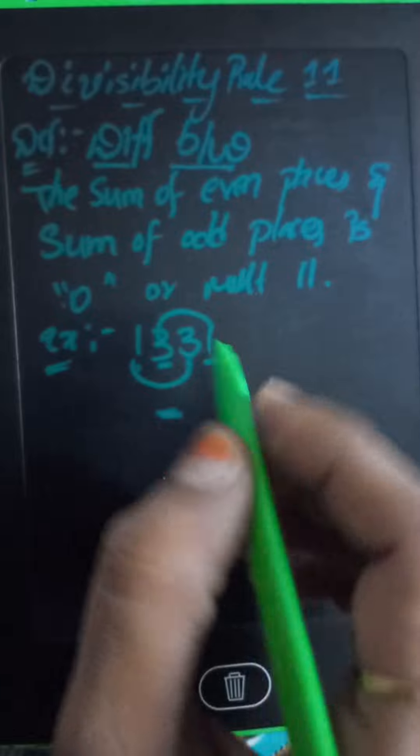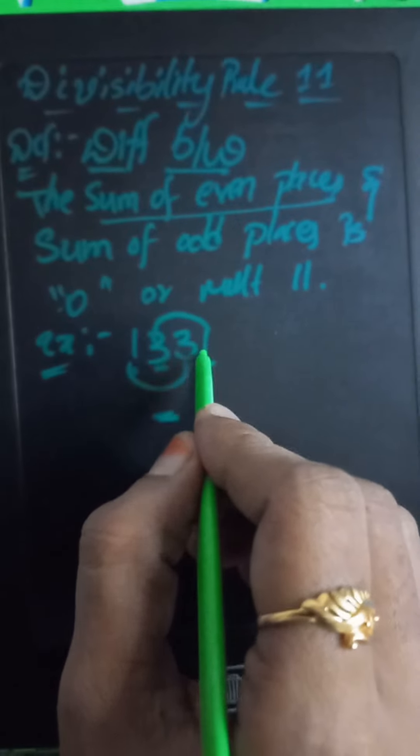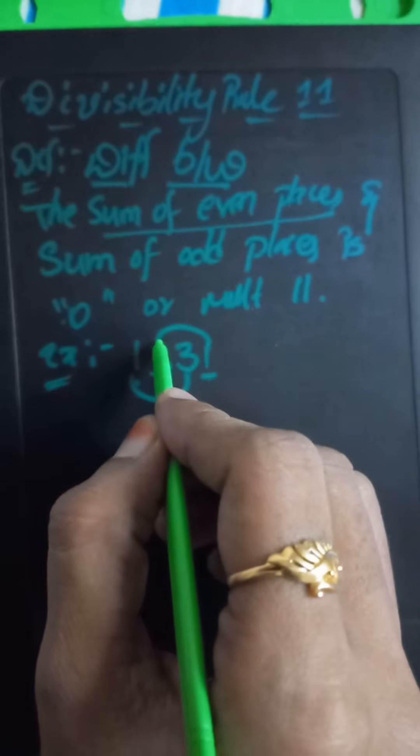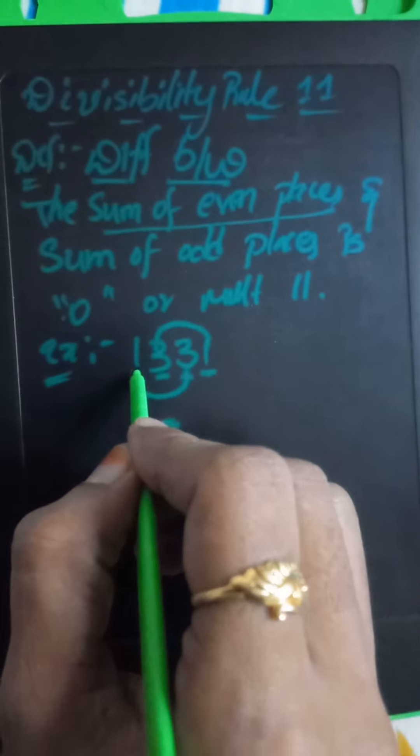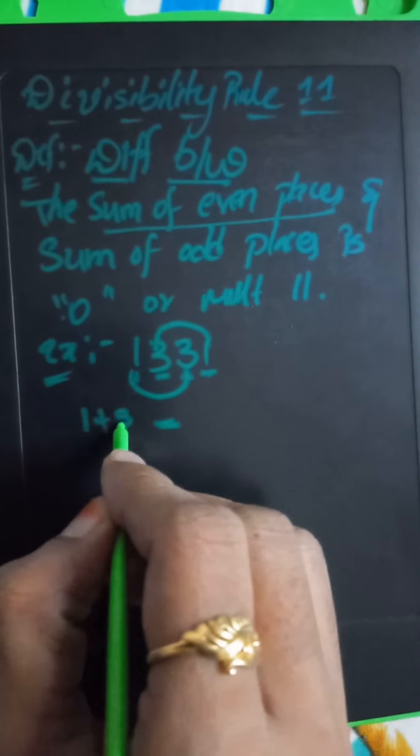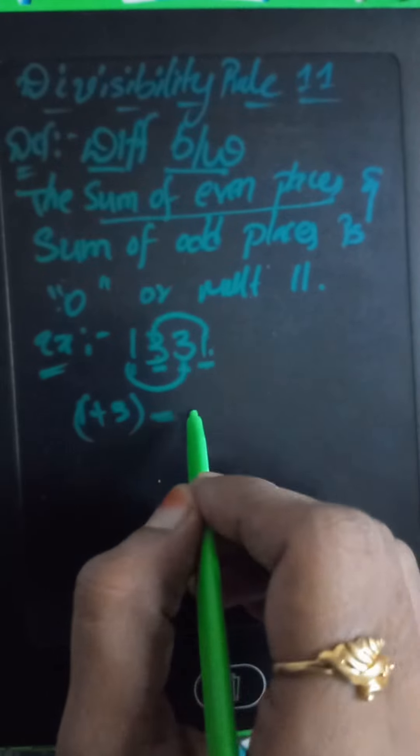The difference between means minus sum of even places - even places means first place, or otherwise second place, third place: 1 plus 3. Sum of odd places: 3 plus 1.